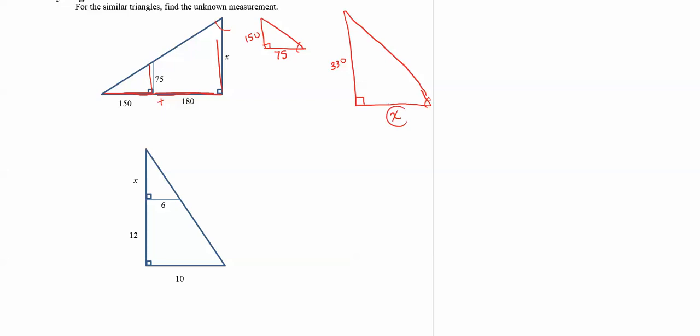So my proportion is going to start with x and I'm going to match up x with the other base. x over 75 equals—notice I went with the big to the small so I'm going to go back to the big and I'm going to do 330 which is the big vertical side over 150.